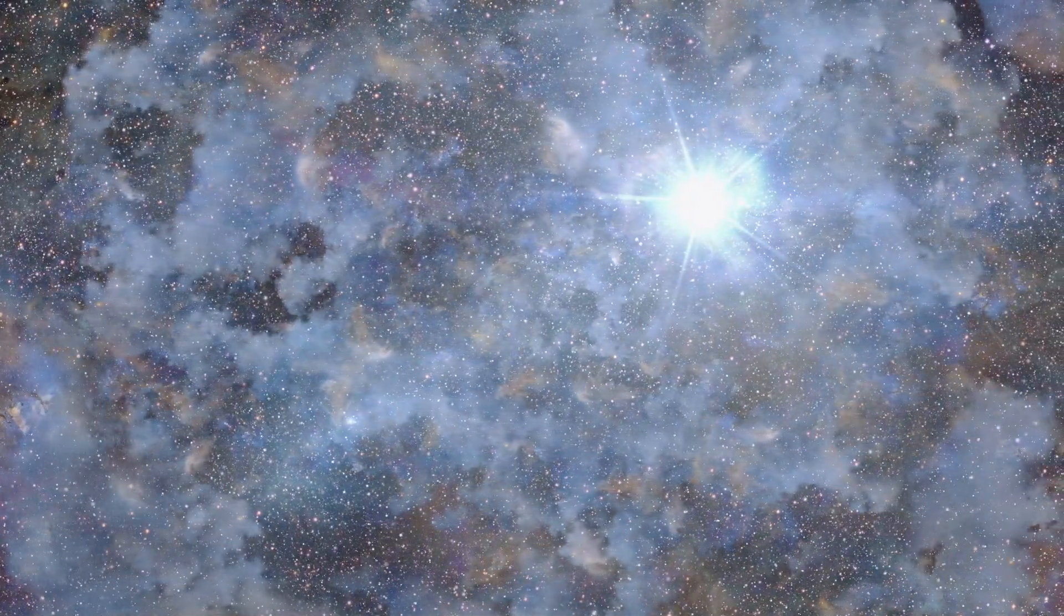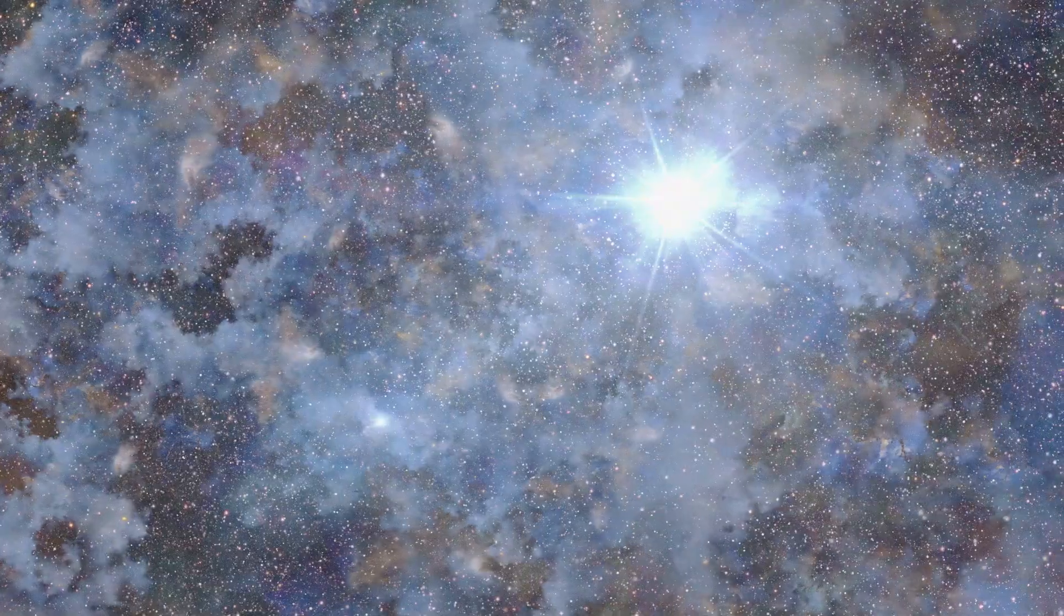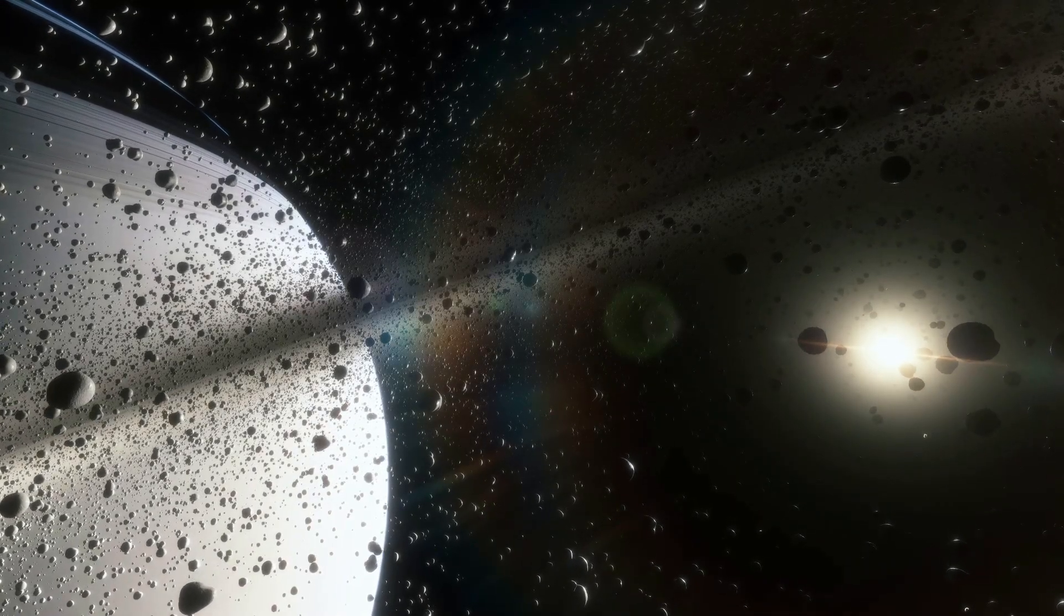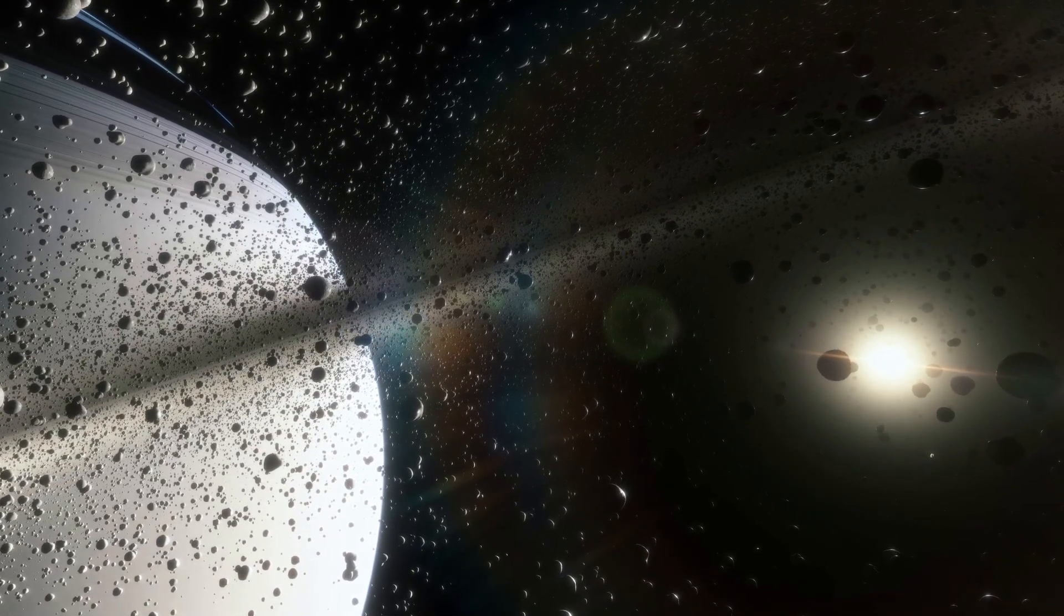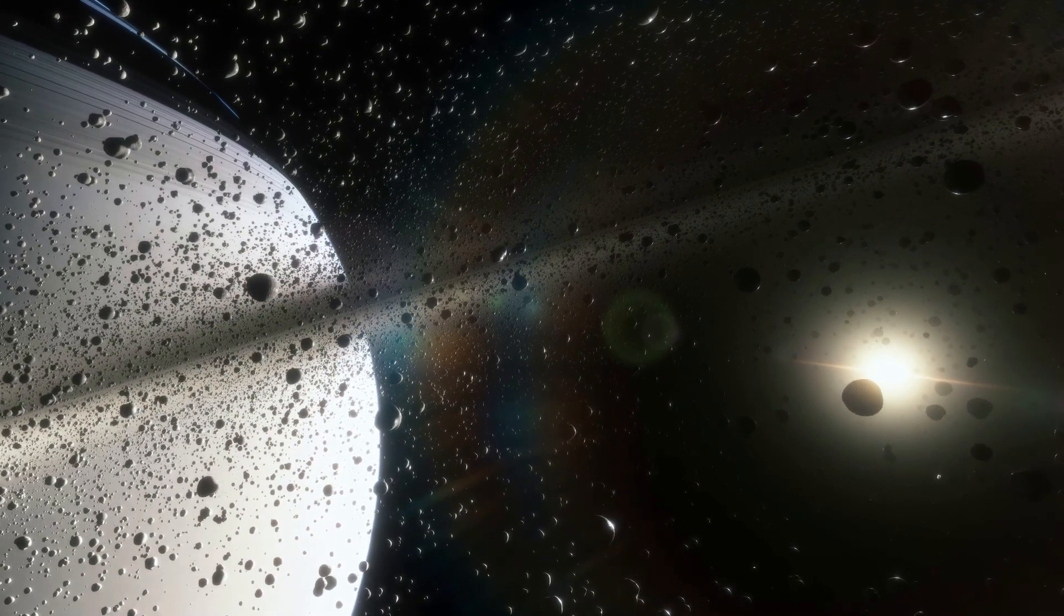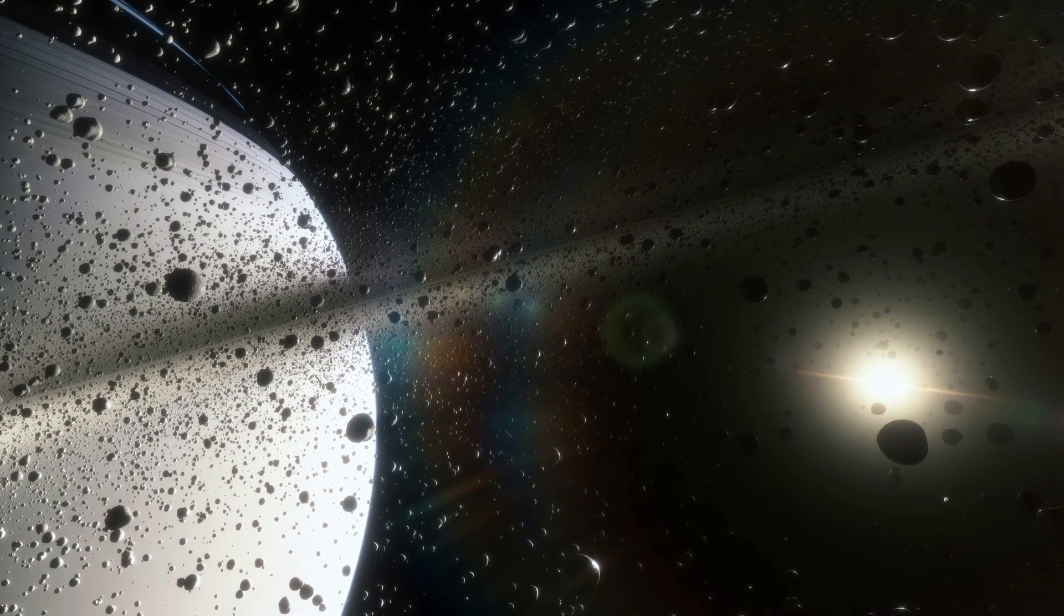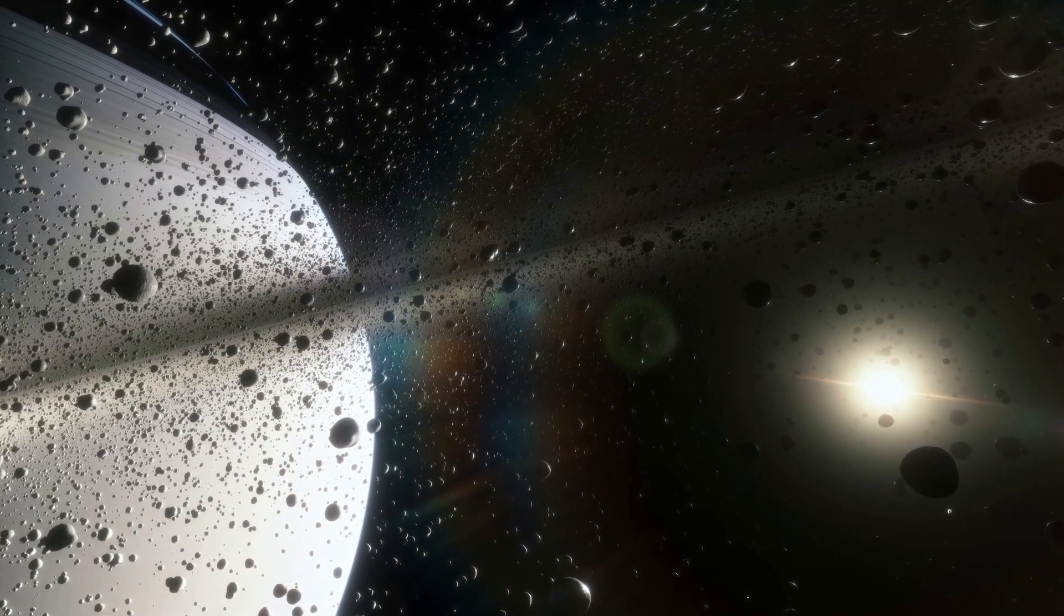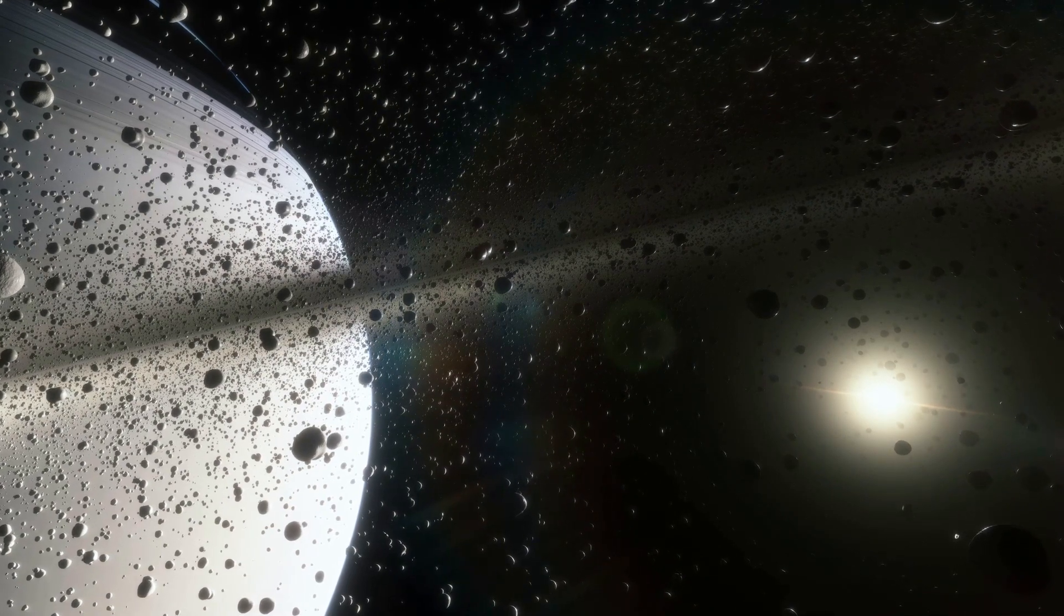The feature of Saturn that makes it so recognizable, the rings, are thought to be comprised of pieces of comets, asteroids, or shattered moons that broke up before they reached the planet, torn apart by Saturn's powerful gravity. There are billions of pieces of ice and rock that help make up Saturn's rings. The ring particles range in sizes, with some being tiny dust-sized ice grains and others being as large as houses, with a few standout parts being the size of mountains.